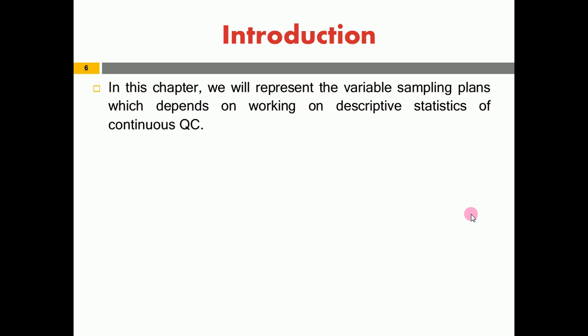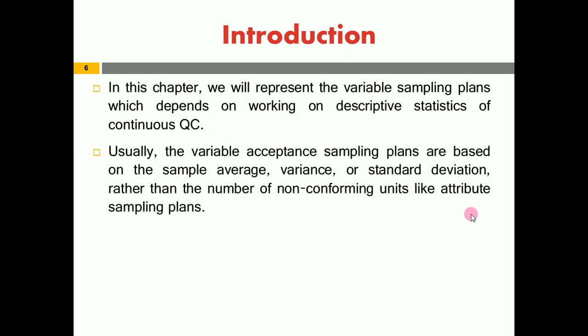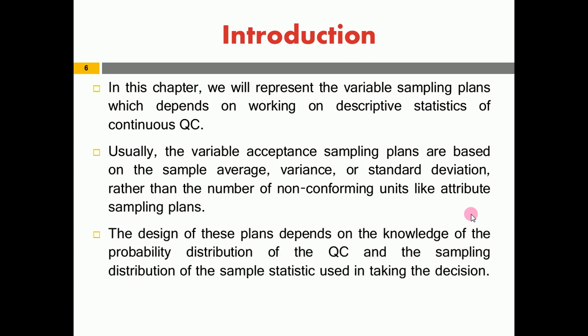The variable sampling plan depends on a quality characteristic of interest that has a continuous distribution, while at the same time we work with a descriptive statistic of a sample whose probability distribution we must know. The common descriptive statistics calculated from the sample can be the sample average, variance, standard deviation, or others. However, the sample average x-bar is the most commonly used. The main idea of the design is based on two aspects: knowing the distribution of the quality characteristic X, and knowing the probability distribution of the sample statistic used for decision-making.